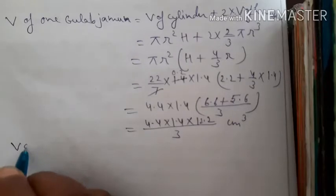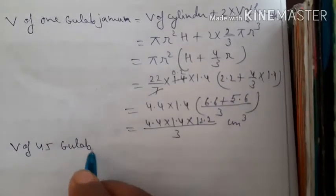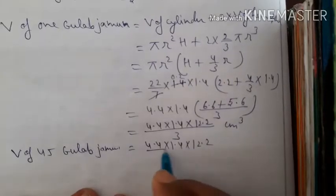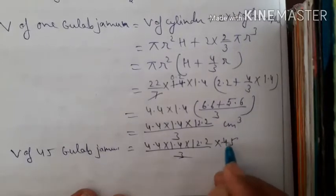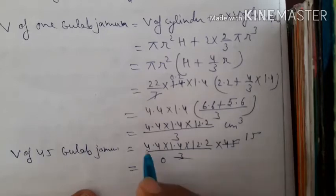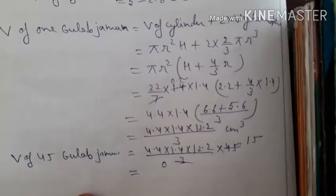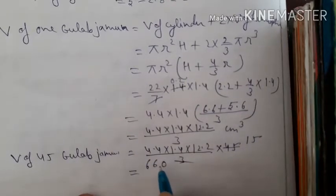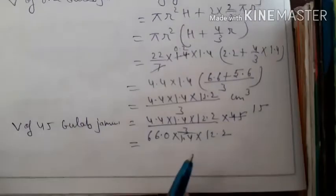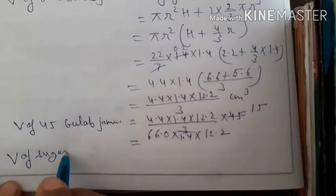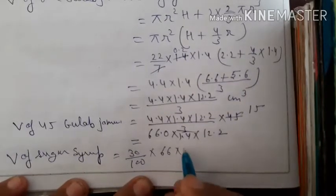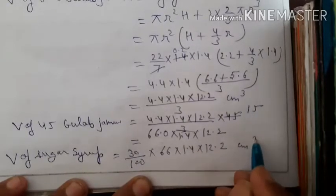Volume of 45 gulab jamuns = 45 × 4.4 × 1.4 × (12.2/3). The 3 and 45 cancel to give 15. So volume = 15 × 4.4 × 1.4 × 12.2 = 66 × 1.4 × 12.2 cm³. Volume of sugar syrup = 30% of this = (30/100) × 66 × 1.4 × 12.2 cm³.